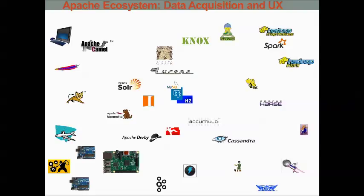Chukwa is an administration tool that displays, monitors, and analyzes MapReduce results to make the best use of the gathered data. Falcon manages data transport, process choreography, and data discovery on Hadoop clusters. Apache Flume is a service that collects, aggregates, and moves large amounts of data such as logs. It can also be used to load data into your Hadoop data platform.